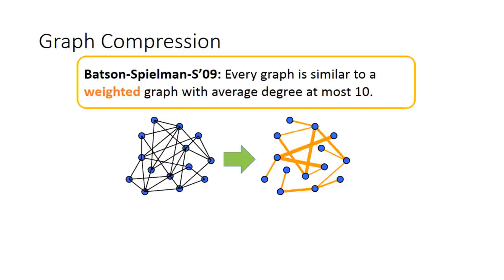That is, every graph is similar to a weighted graph with average degree at most 10. That's a graph with very few edges.